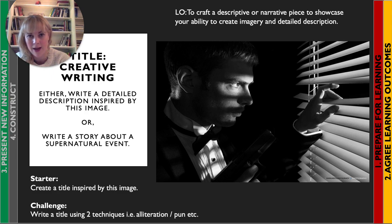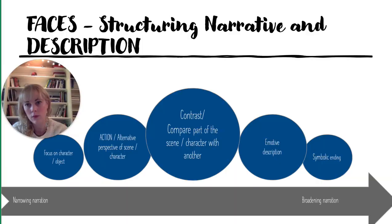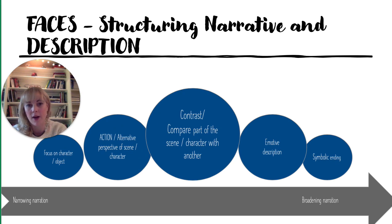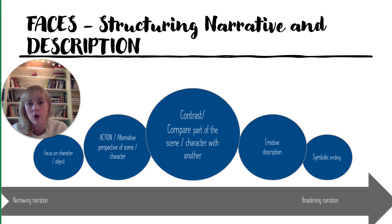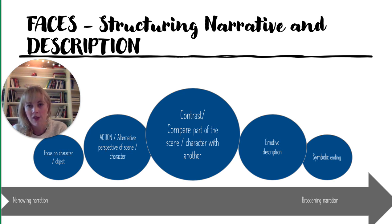Let's now look at how you plan out your piece. I'm going to talk you through a trick to help you plan a narrative or descriptive piece of writing. This can be used for either task. I'm going to talk you through how you can map out what your paragraphs will be about. You'll need to copy the circles down into your book as a reminder about the structure. The acronym we use to remember this is FACES — each letter stands for what each of your paragraphs will focus on, giving you five major paragraphs.